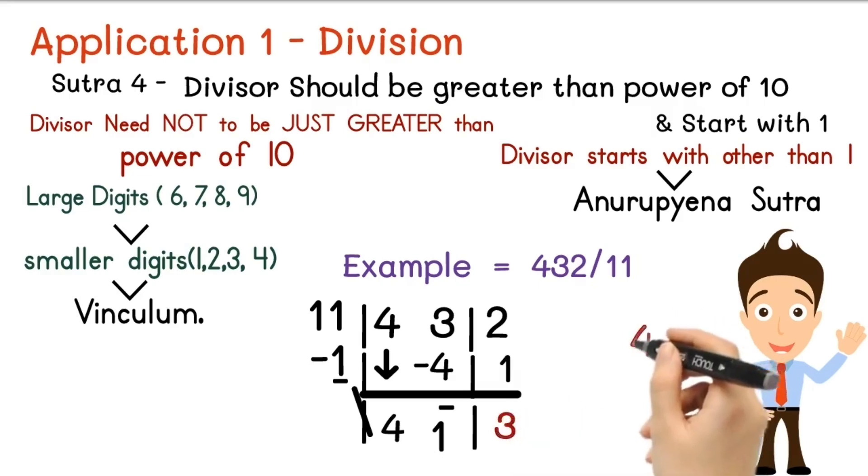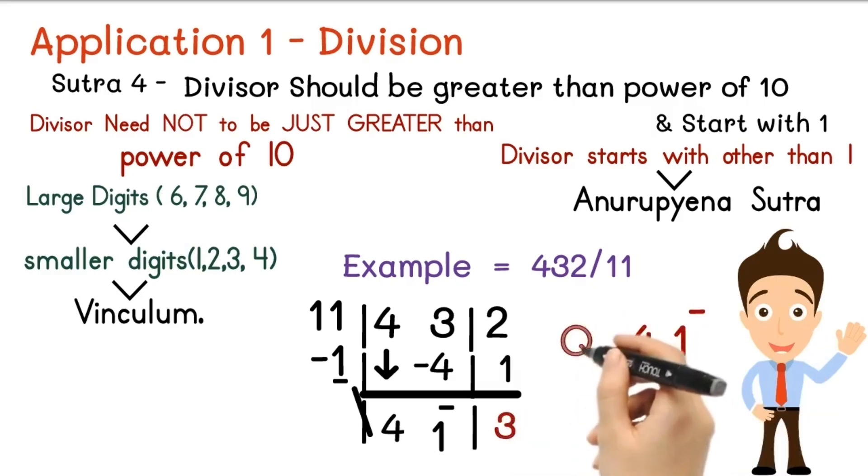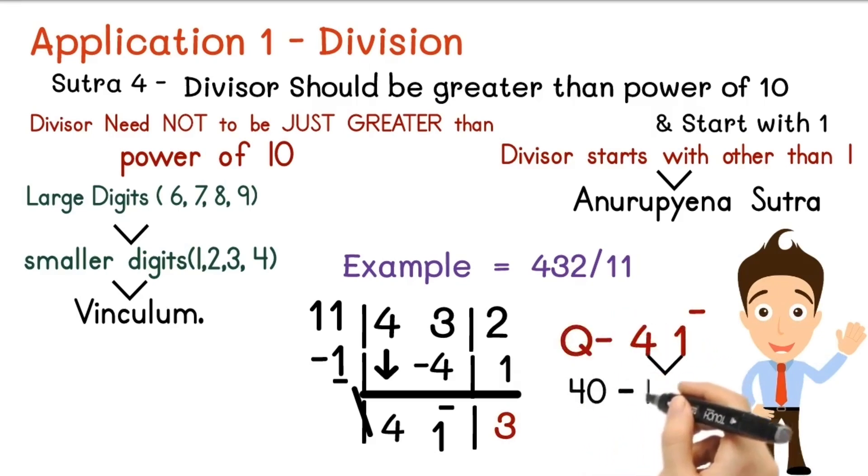Add this 1 to the next number. 2 plus 1 equals 3. Now we got quotient as 4 vinculum 1, which is a vinculum number. So right now we need to convert this into the form of normal number. So 40 minus 1 equals 39. So our quotient is 39 and the remainder is 3.